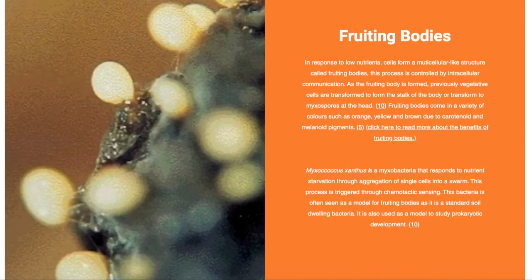The fruiting body is formed by the transformation of vegetative cells to form the stalk and head of the body. Chemotactic sensing often triggers the formation of swarms in bodies.